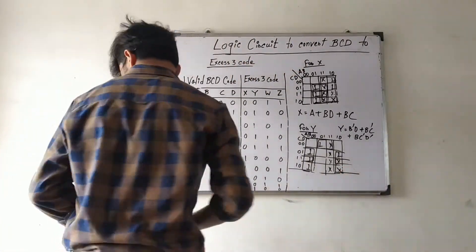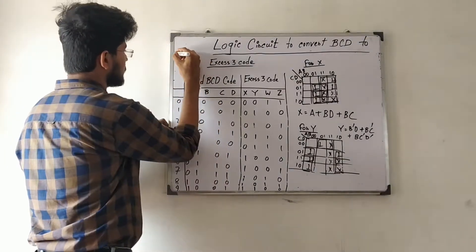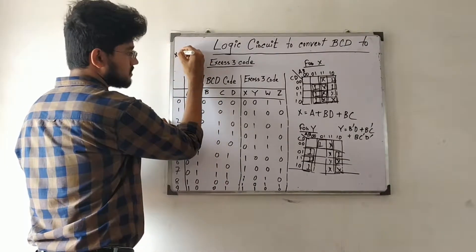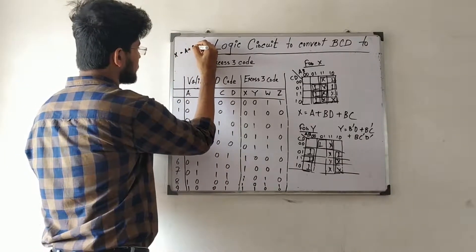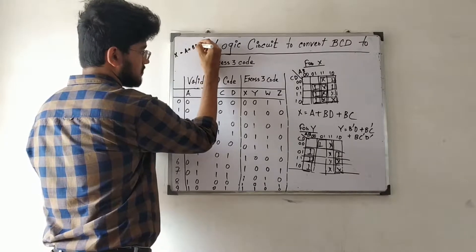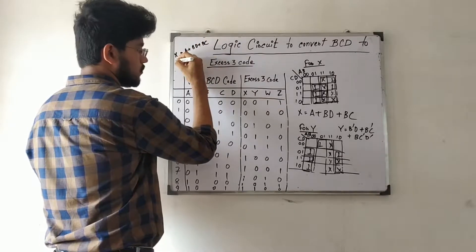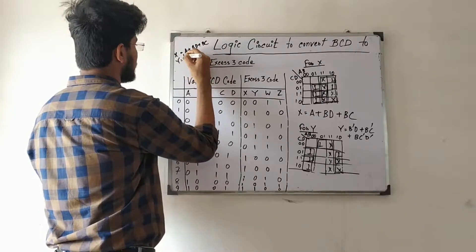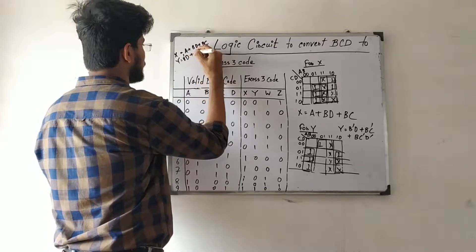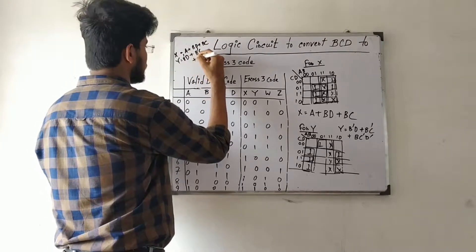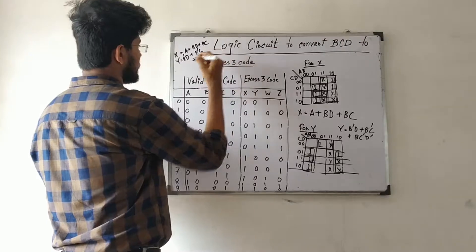To summarize the expressions found so far: X = A + BD + BC, and Y = B̄D + B̄C + BC̄D̄. We still need to find K-maps for the remaining two outputs W and Z.